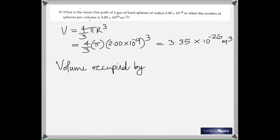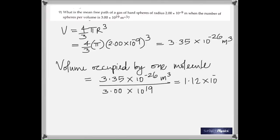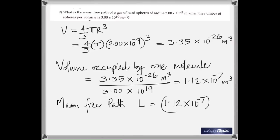Next, find the volume occupied by one molecule by dividing the sphere volume by the number density. The mean free path is then the cube root of that volume per molecule. Taking the cube root of the result gives 4.69 × 10⁻⁴ meters.